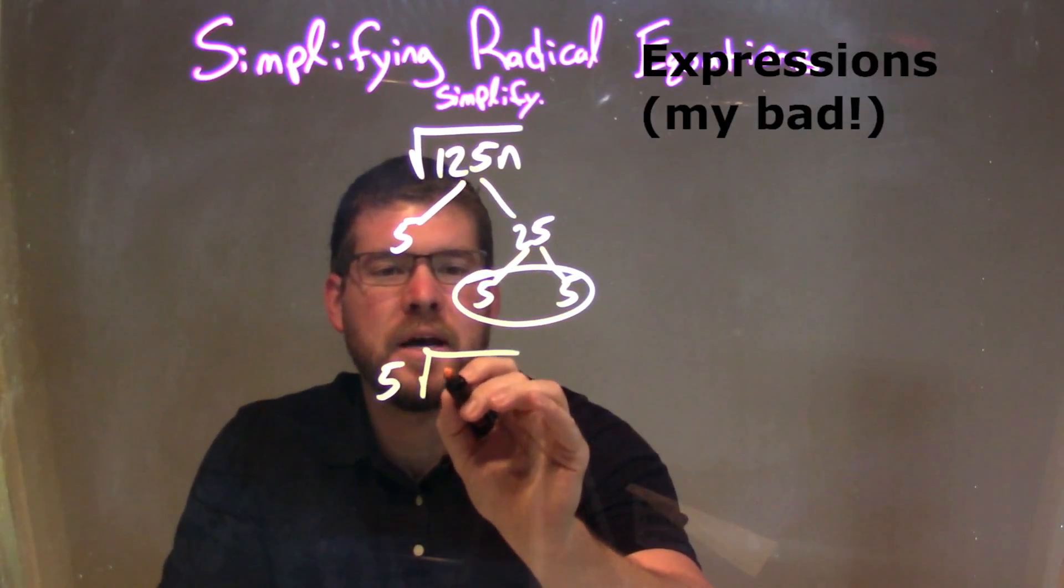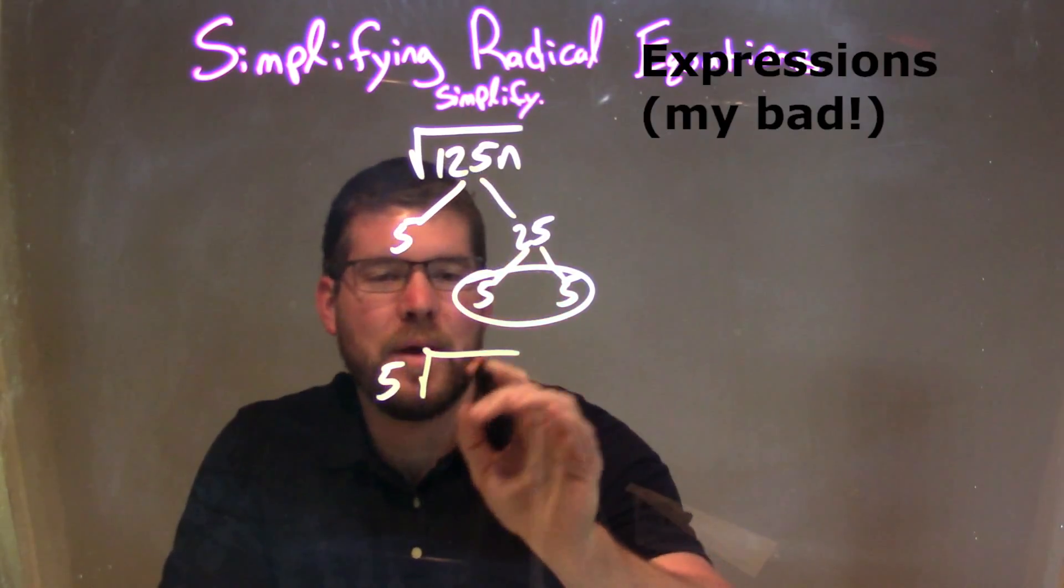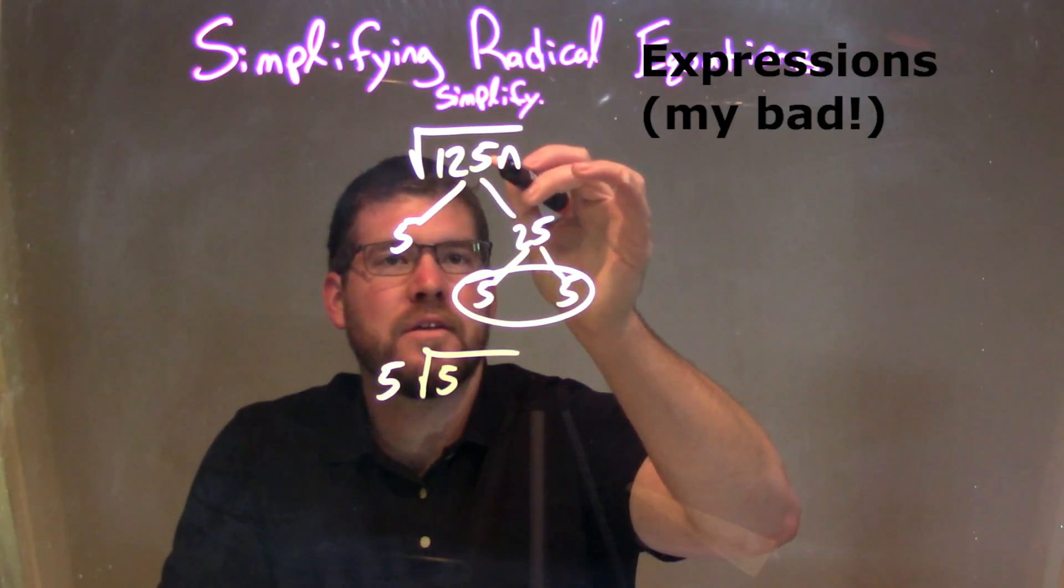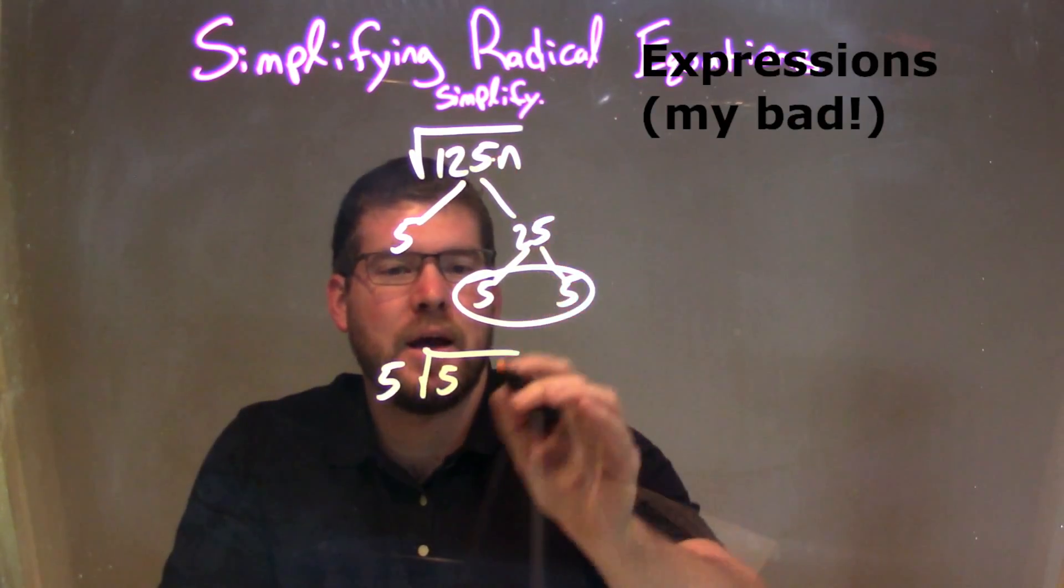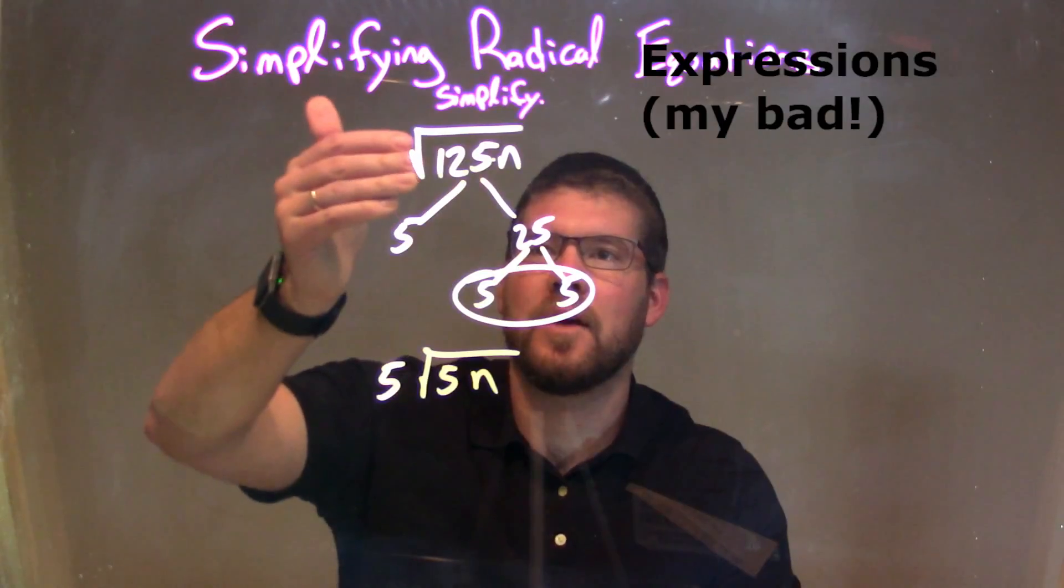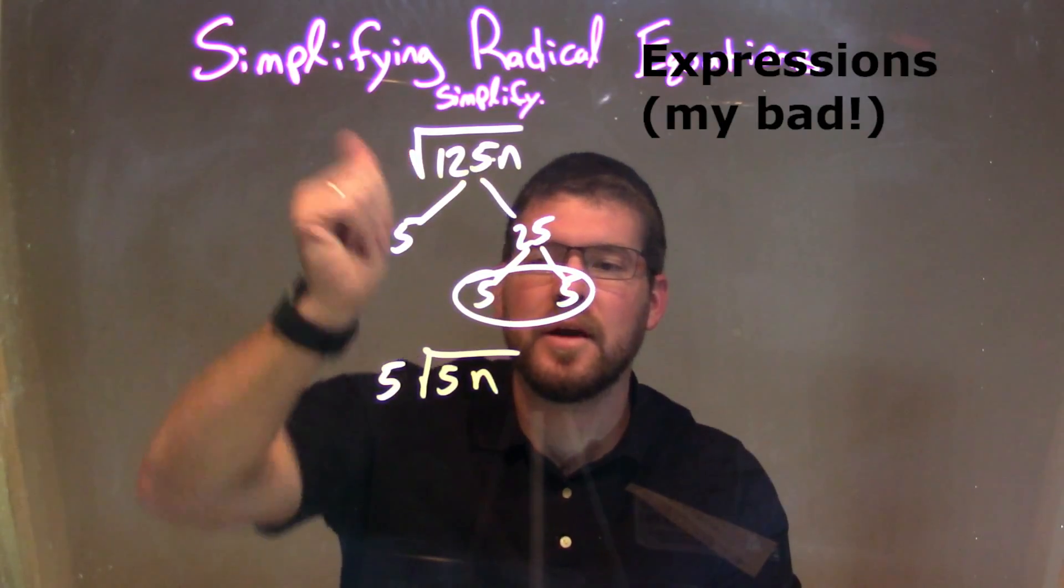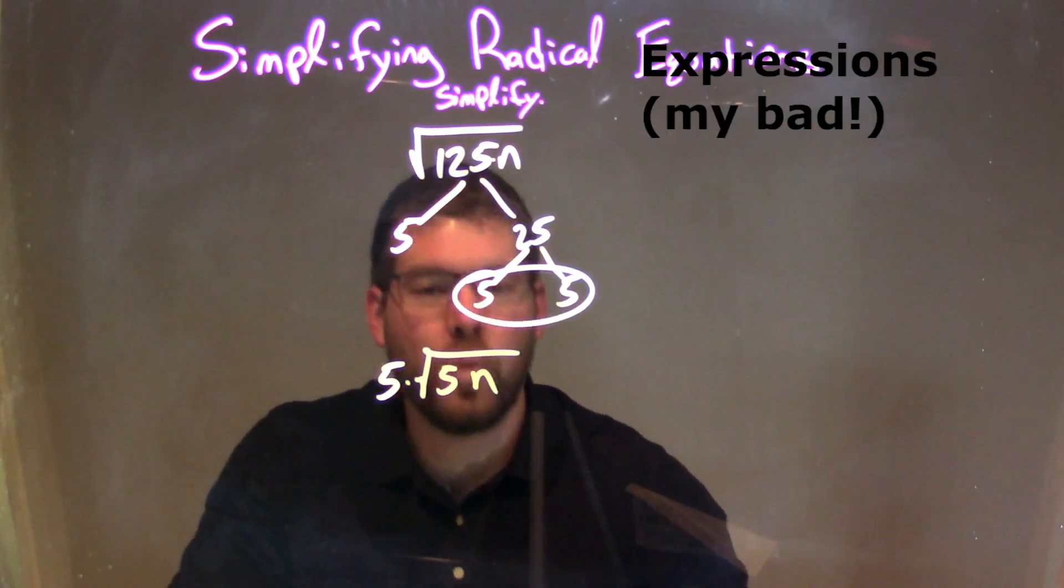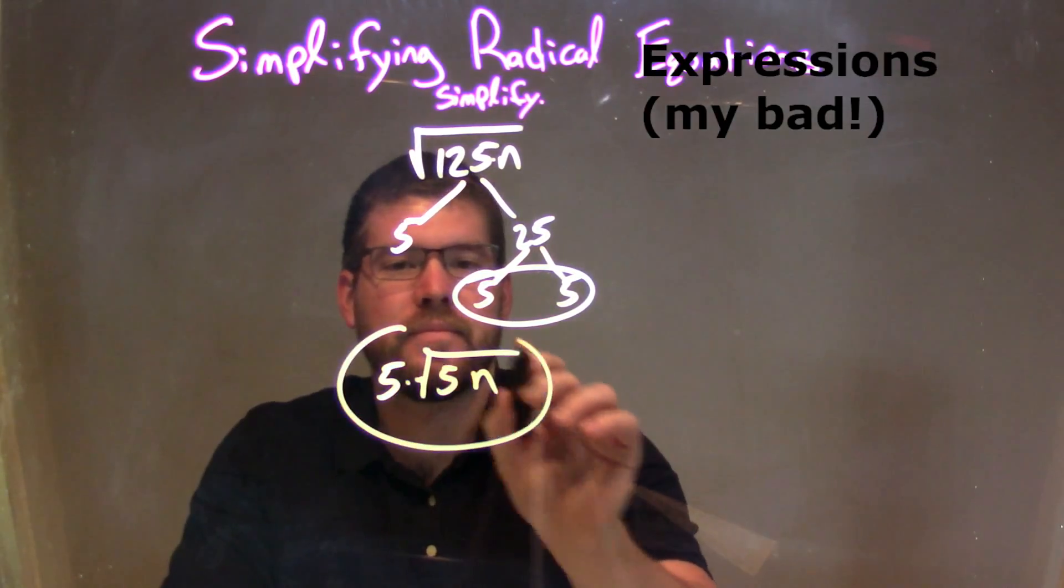There's one 5 left over on the inside, so he didn't have a pair. So the 5's on the inside, and then the n is left over because times n. So times n is on the inside, and so now we can simplify it from the square root of 125n is the same thing as 5 times the square root of 5n. There we go.